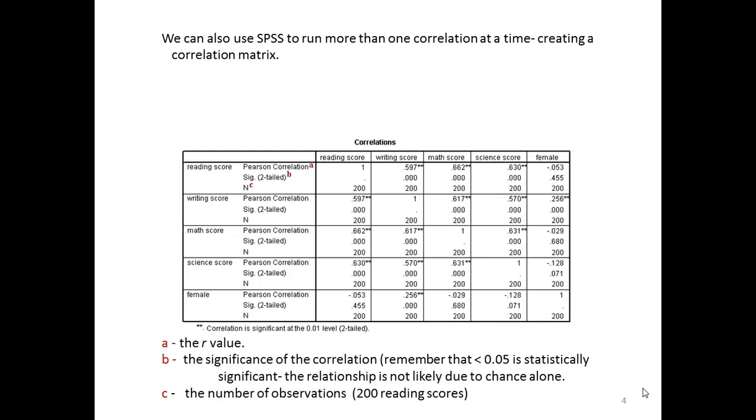So let's say we have a writing score here, and we want to know if it correlates with a math score. And we see that there's a .617 strength of that relationship, and it is positive. It's significant because the P is less than .05. It's quite significant, but it's a rather moderate relationship.